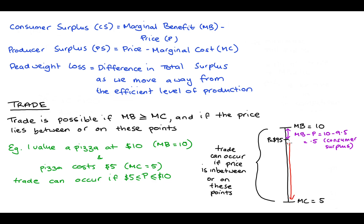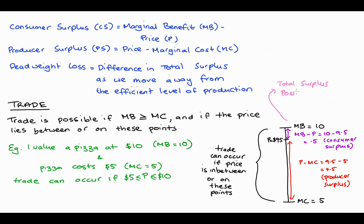To find our producer surplus, we take the price minus the marginal cost of production: $9.50 minus $5 equals $4.50. It only cost the producer $5 to make this pizza, but they got $9.50, so they get $4.50 extra surplus. The total surplus available from this trade is just the difference between marginal benefit and marginal cost: $10 minus $5 equals $5.